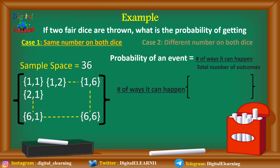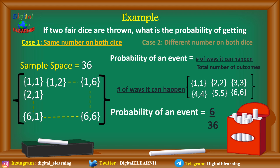Our interest is the same number on both dice. Applying the probability formula, the number of ways this can happen is six: (1,1), (2,2), (3,3), (4,4), (5,5), and (6,6). The total number of outcomes is 36. So the probability is 6 divided by 36, which comes to 16.67 percent.